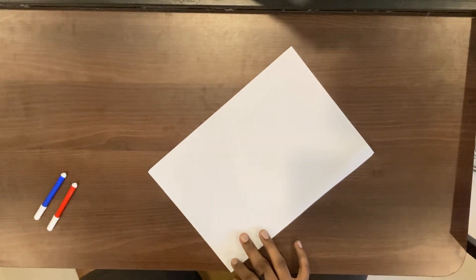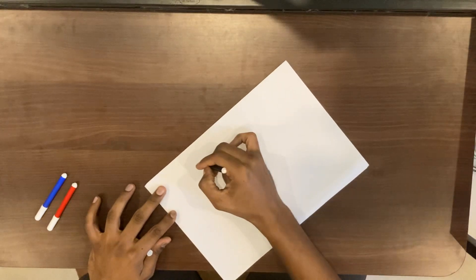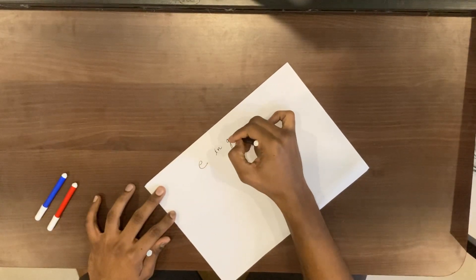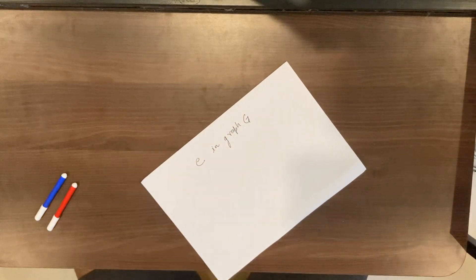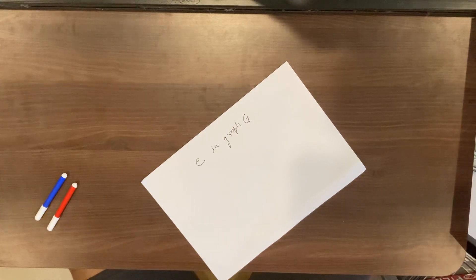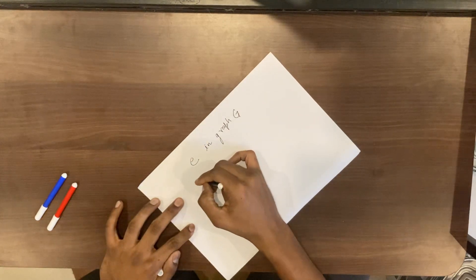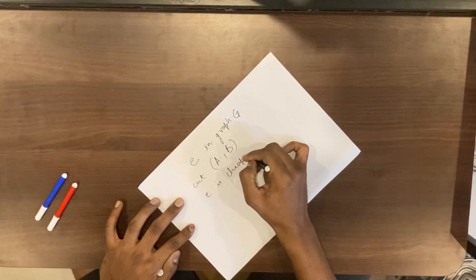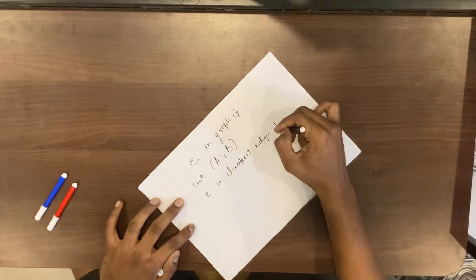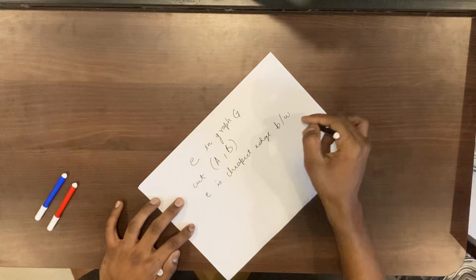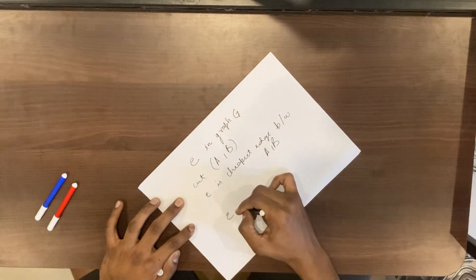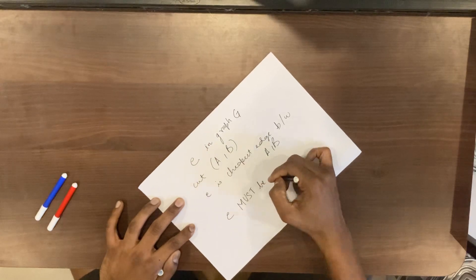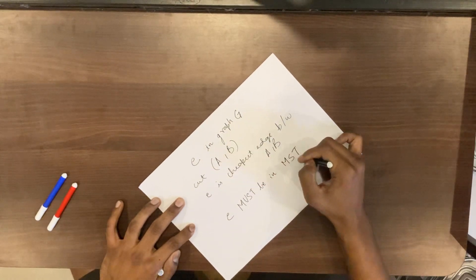What the cut property says is: consider an edge E in graph G. Suppose there is a cut A and B of graph G, such that E is the cheapest edge crossing the cut between A and B. Then E must be in the minimum spanning tree of the graph.